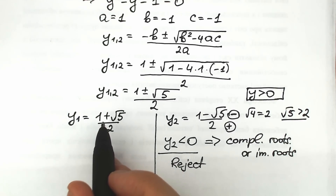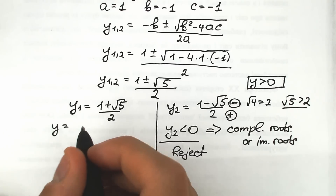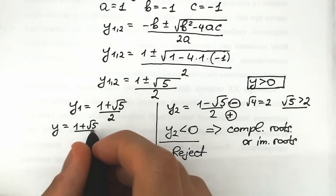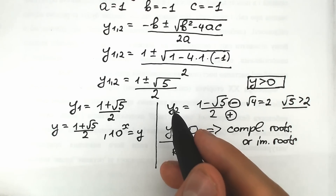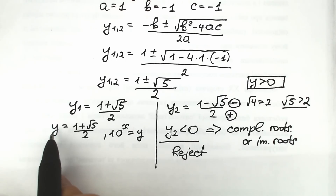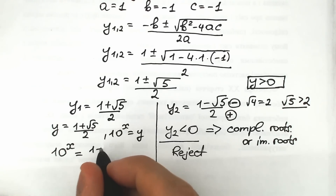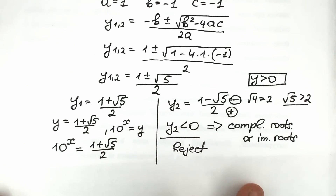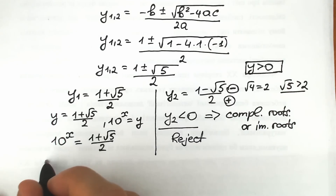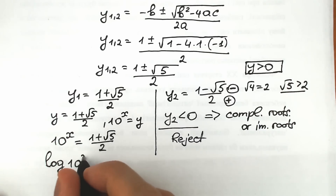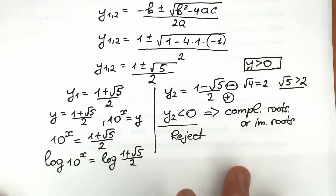So our only valid root is y₁: y equals (1 plus square root of 5) over 2. Since we set 10 to the power x equal to y, we now have: 10 to the power x equals (1 plus square root of 5) over 2. To solve for x, let's apply log to both sides: log(10 to the power x) equals log of (1 plus square root of 5) over 2.